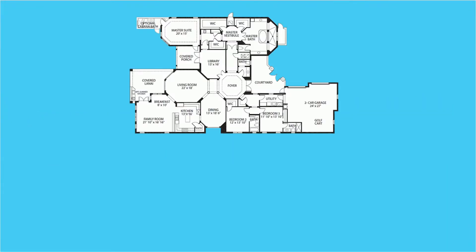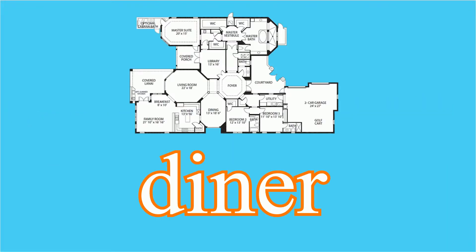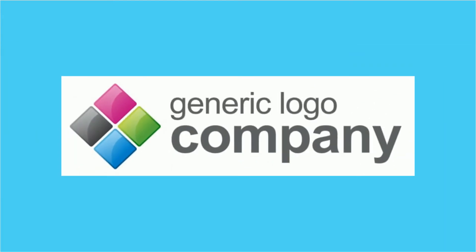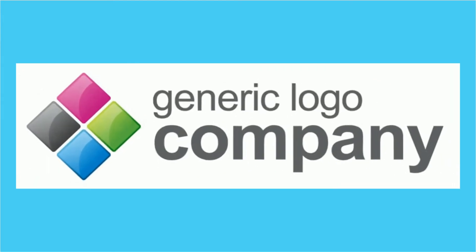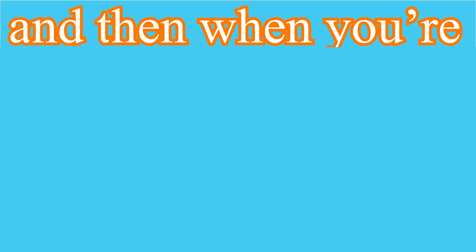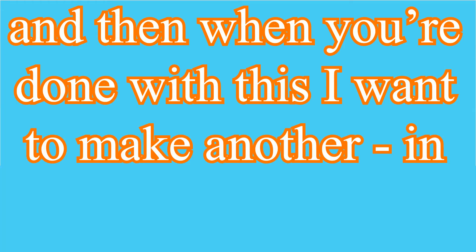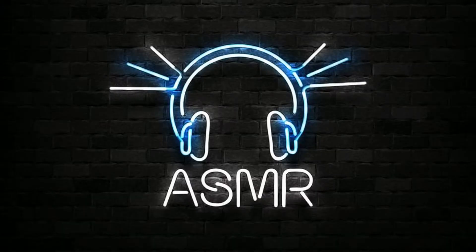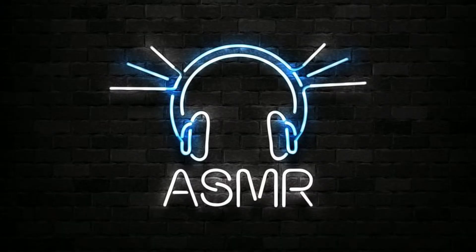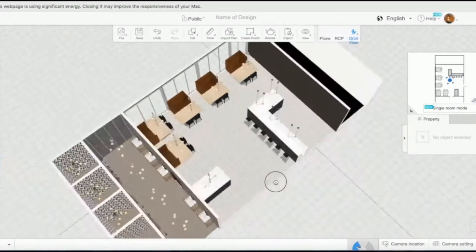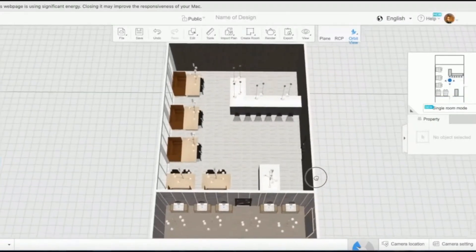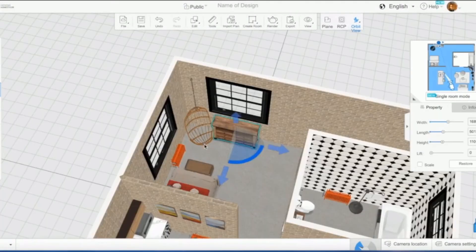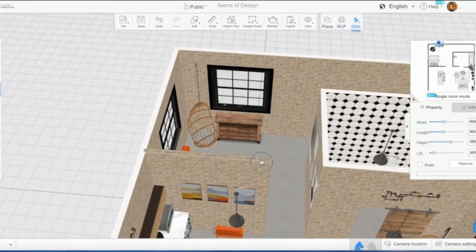Alright everybody, in this module we're going to create a floor plan for a diner that you're going to create. You're also going to create a company name for that diner and also a logo. And then when you're done with this, in the next module, I want to make an ASMR video on how to take this into a program called Homestyler and turn those floor plans into 3D.